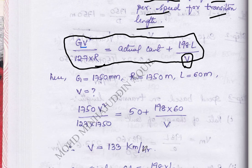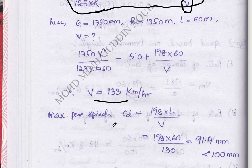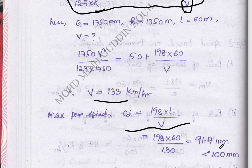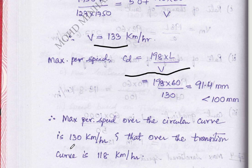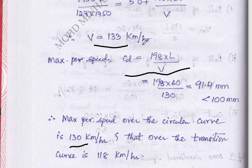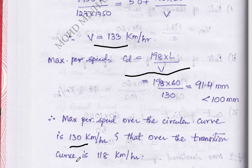After solving, we calculate Cd = 190L/V and get 91.4 mm, which is less than 100 mm. Therefore, the maximum permissible speed over the circular curve is 130 km/h — we take 130 km/h because the problem states it as the maximum, and the calculated 133 km/h exceeds that value. The speed over the transition curve is 118 km/h.